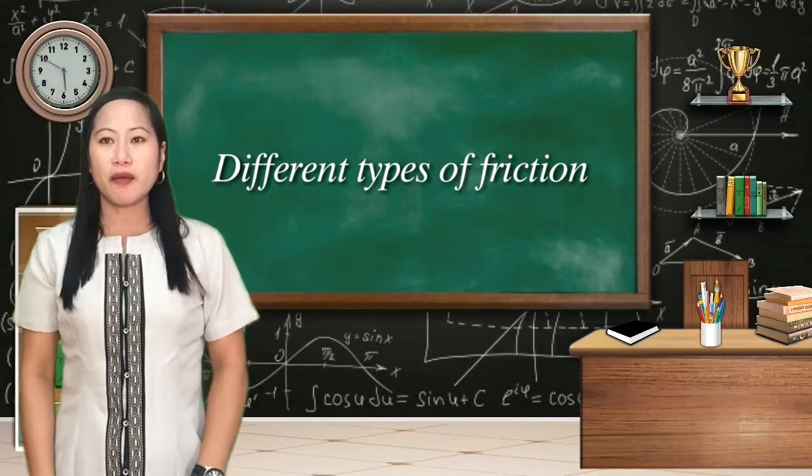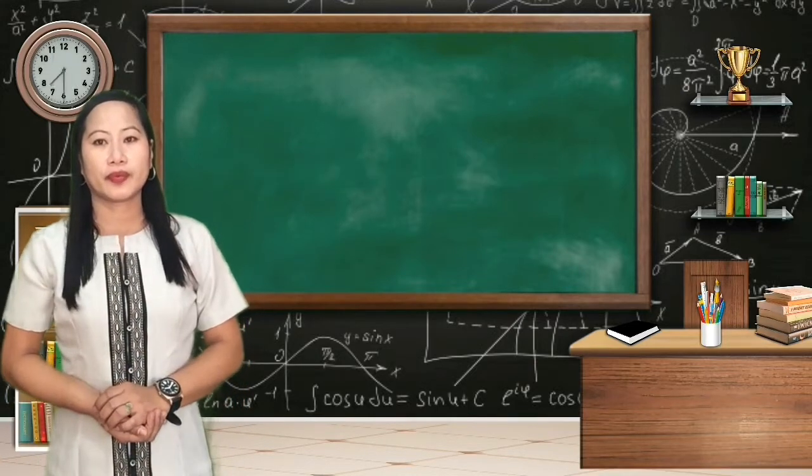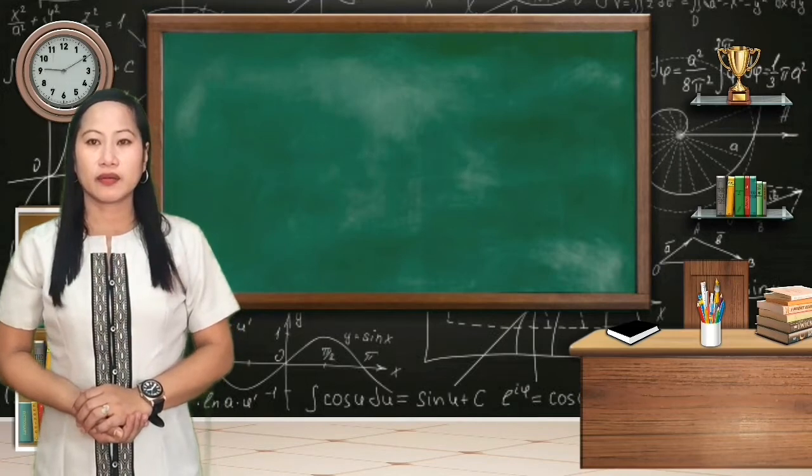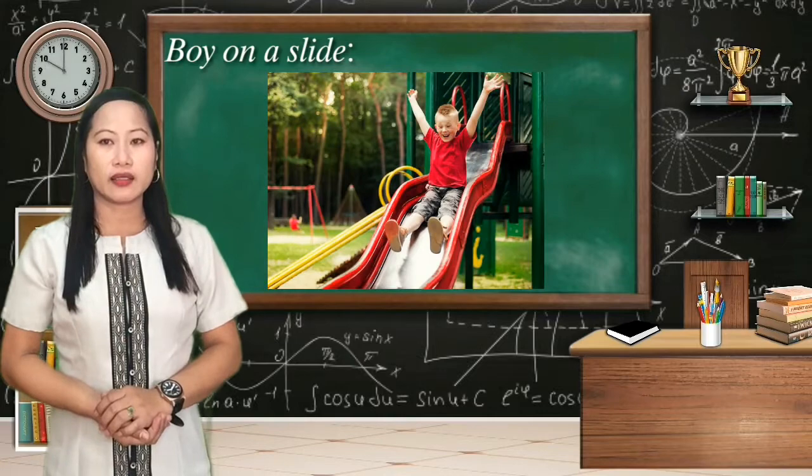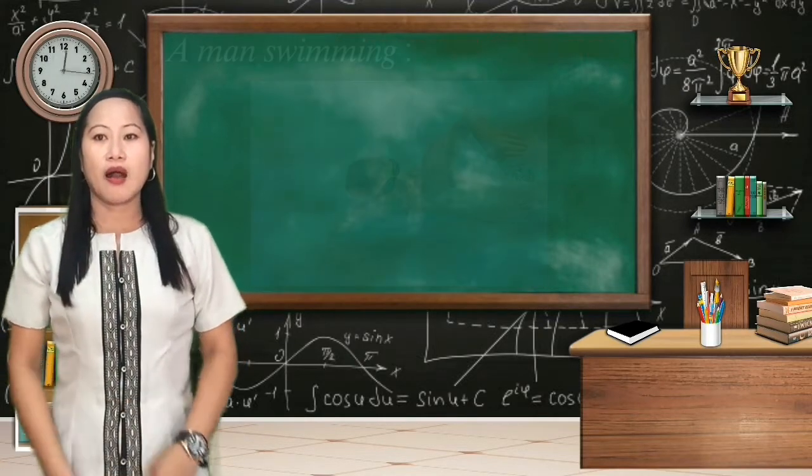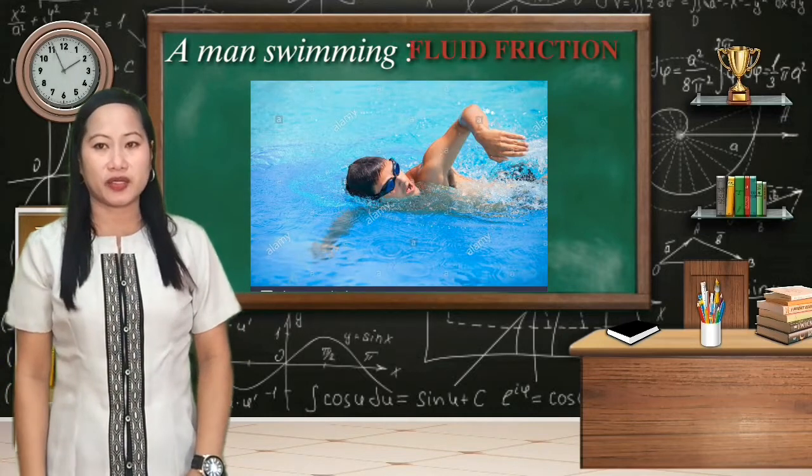We have here examples of the different types of friction. Here are the pictures. A boy on a slide is an example of sliding friction. A man swimming is an example of fluid friction.